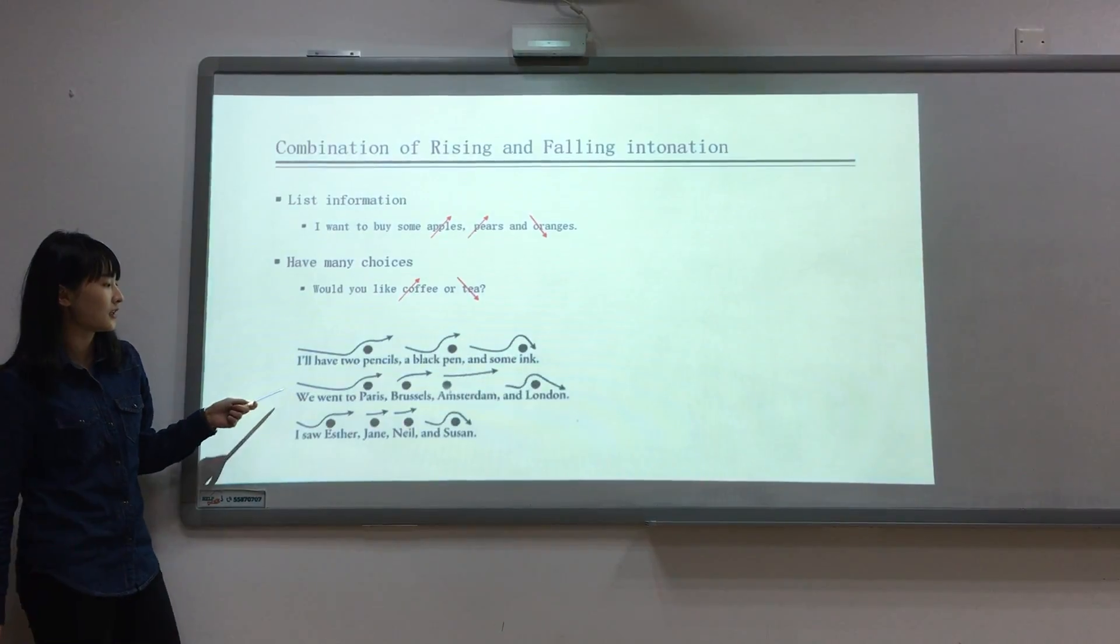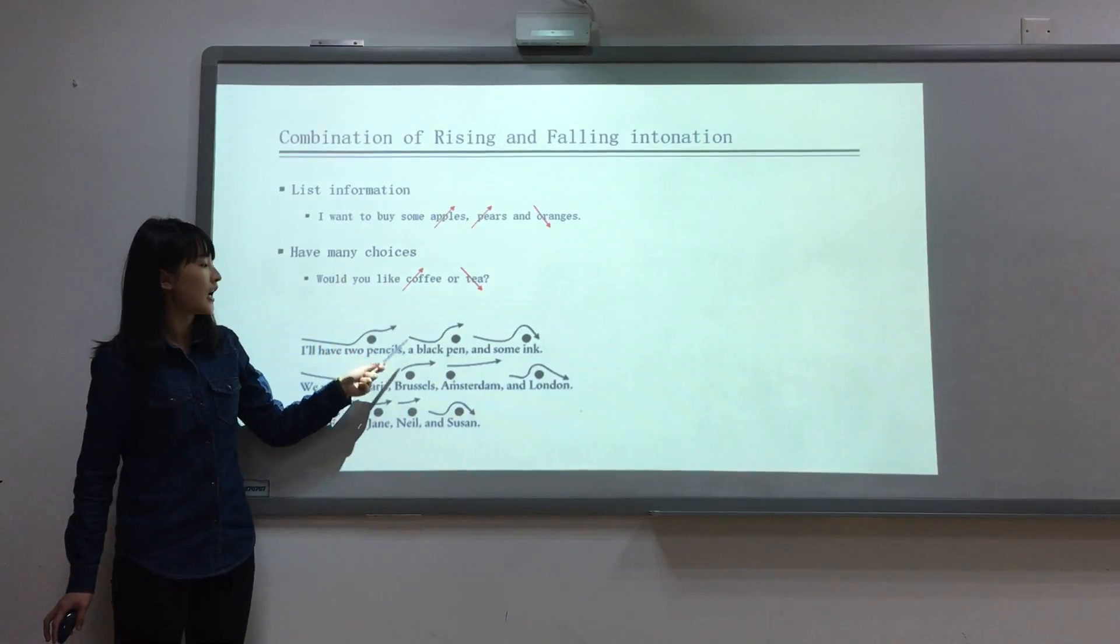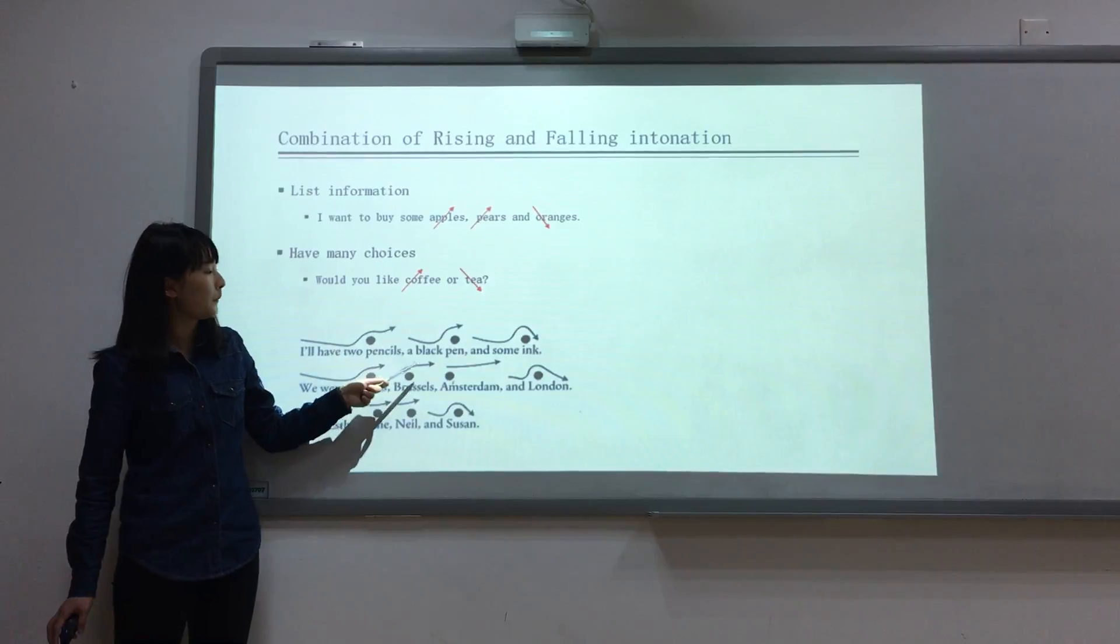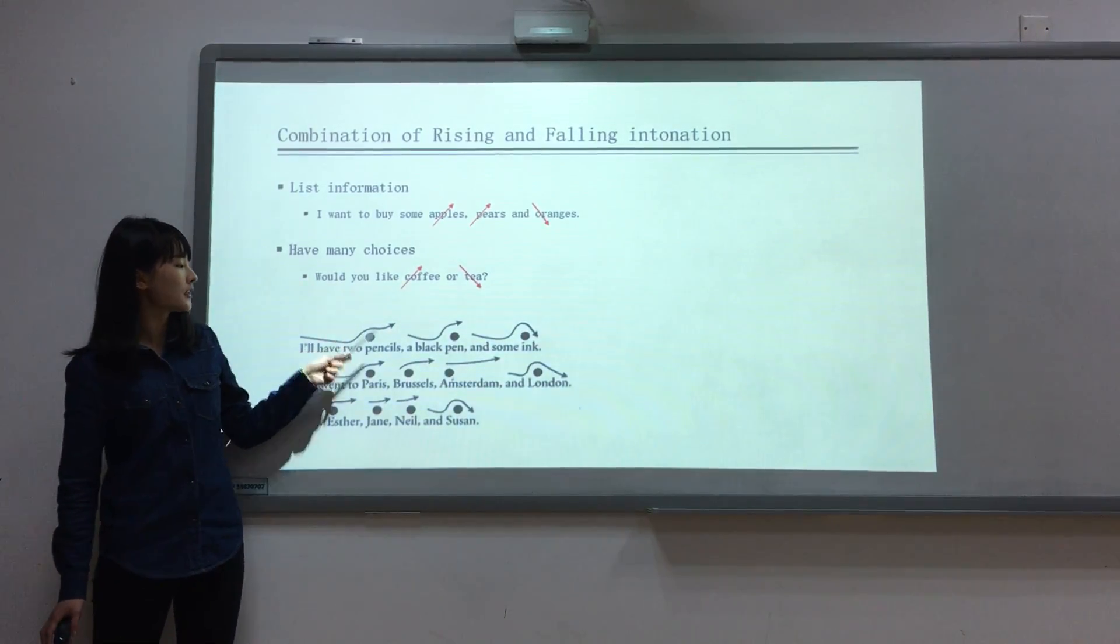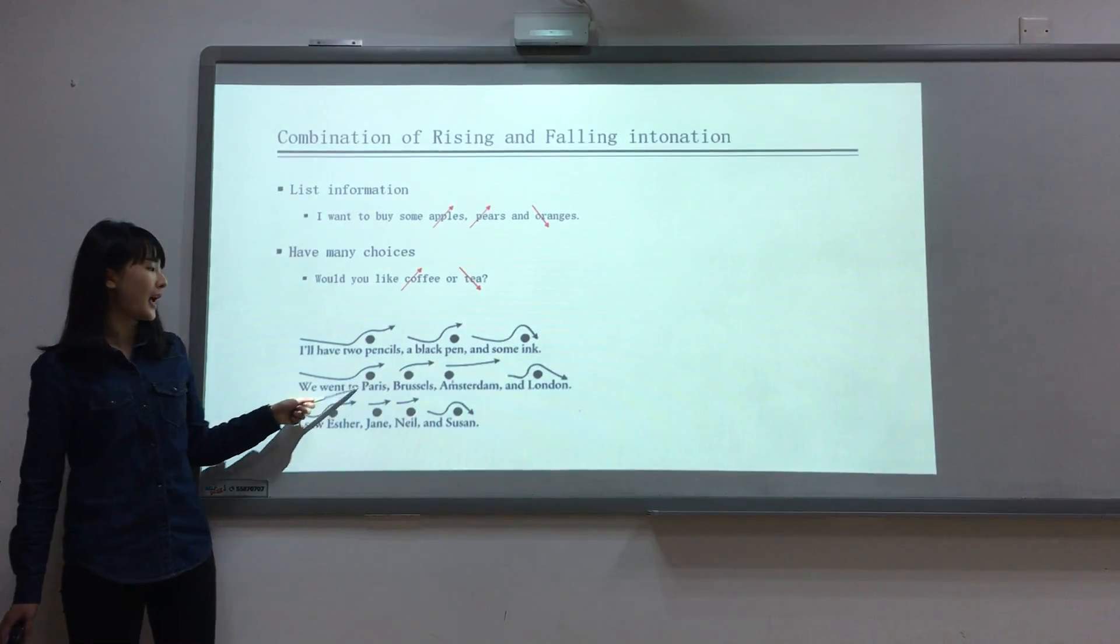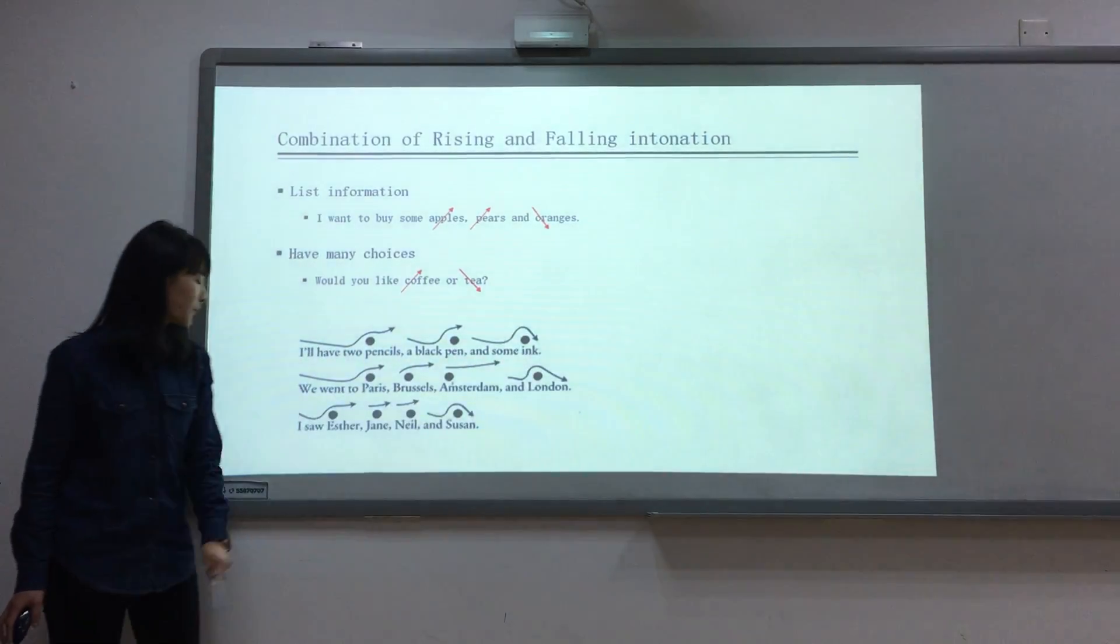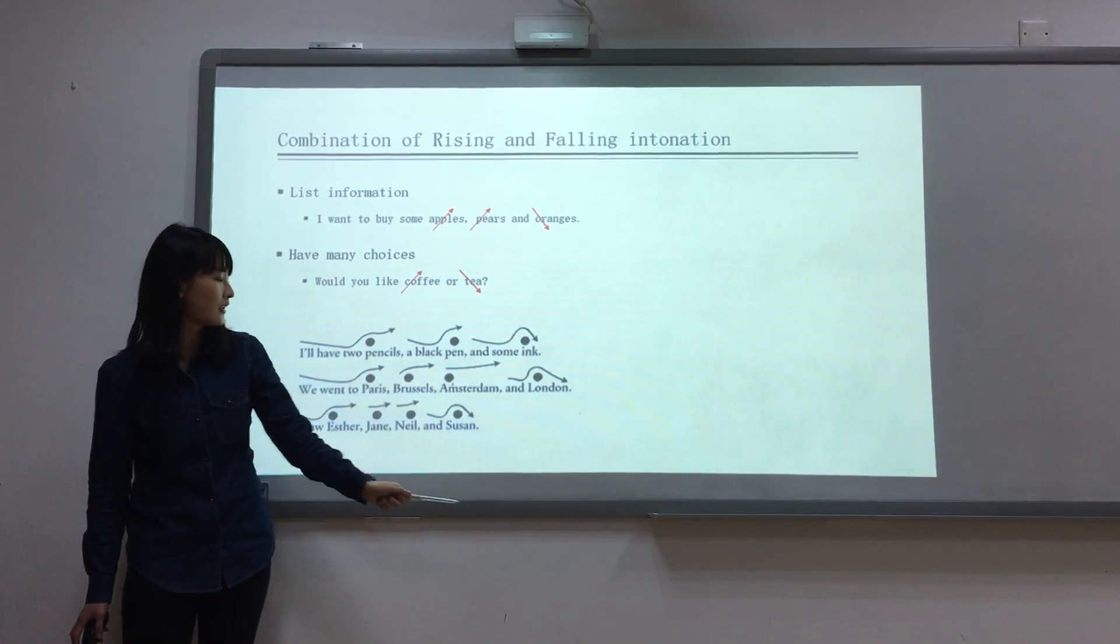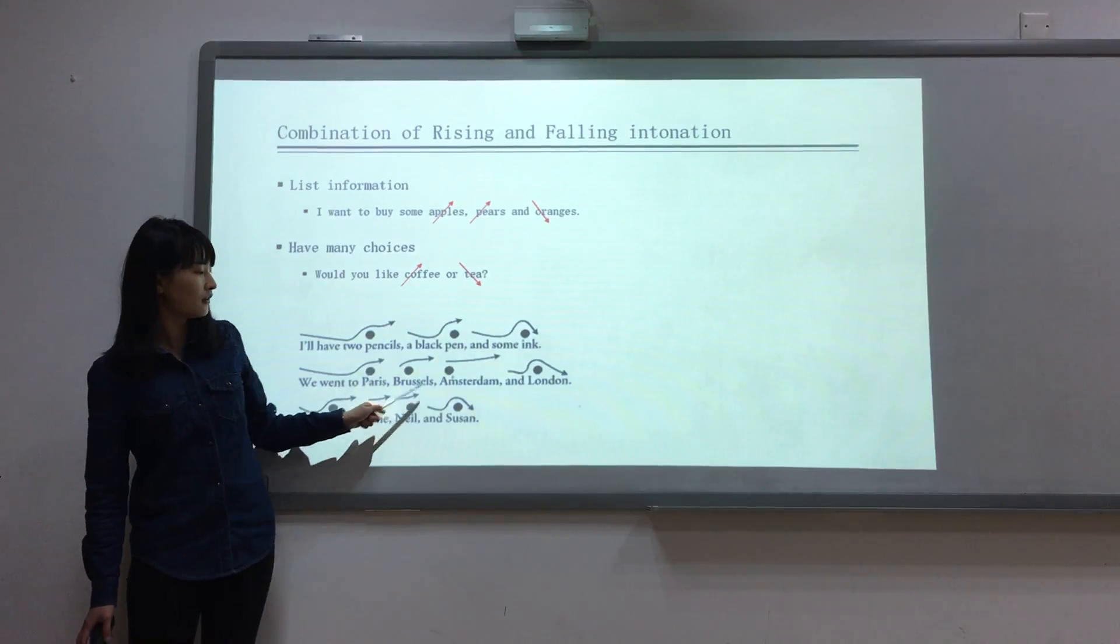There are three sentences and we can practice them twice. 'I will have two pencils, a black pen, and some ink.' 'We went to Paris, Brussels, Amsterdam, and London.' 'I saw Esther, Jane, Neil, and Susan.'